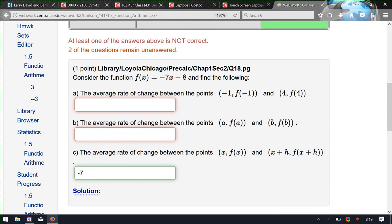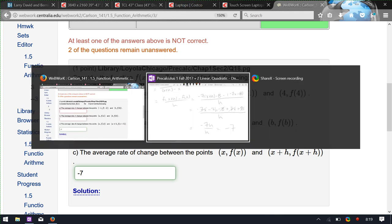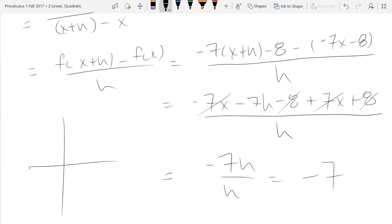So we can graph this function very easily. What type of graph would this function have, this f of x function? Linear. It's linear, so it'll be a line. Intercept negative 8. Y-intercept negative 8, slope negative 7. So a really fast graph is going to look something like this right here. And it turns out on a linear function on a line, no matter what two points you pick, you're always going to compute the same slope. So right away, the average rate of change on a linear function is always going to be the same number. So in this case, it'll always be negative 7.